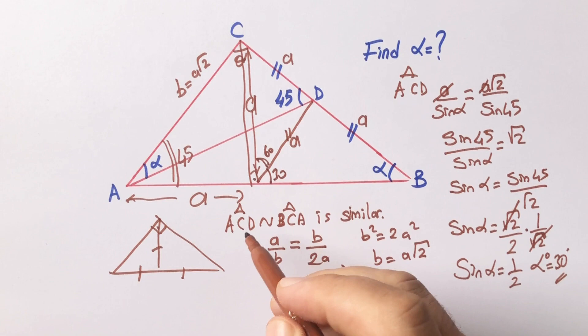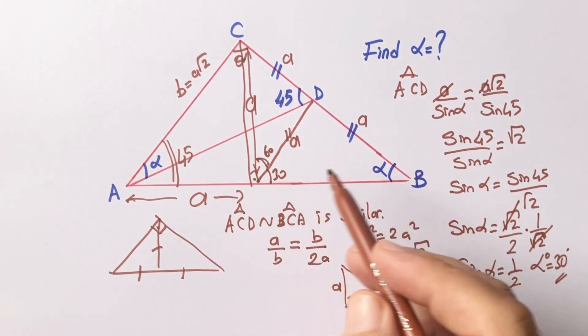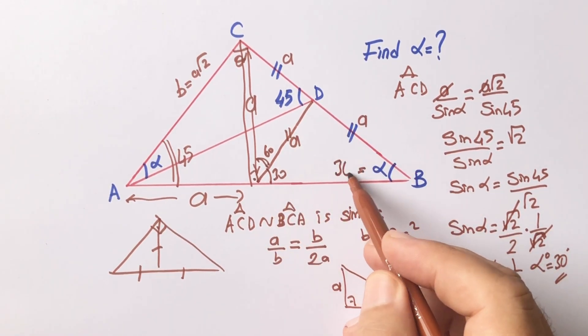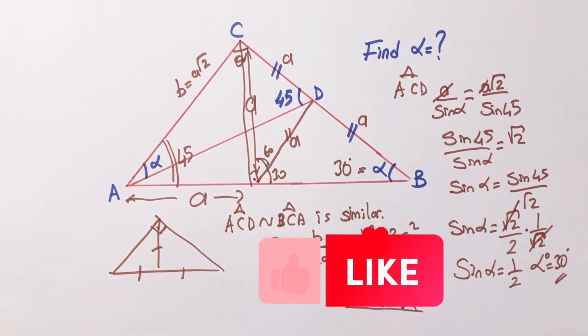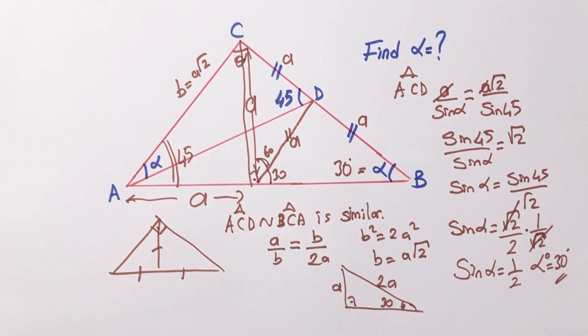Therefore, this angle must be 30 degrees. And this is an isosceles triangle, so alpha is going to be 30 degrees. Thanks.